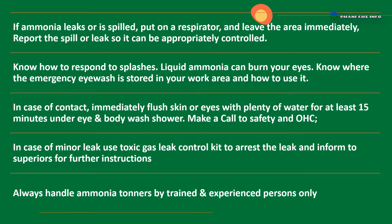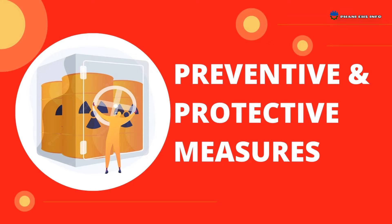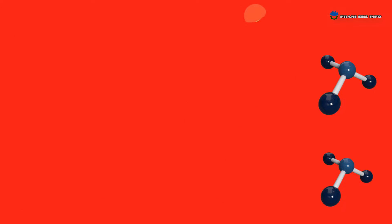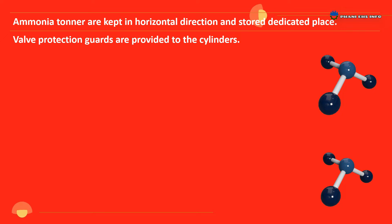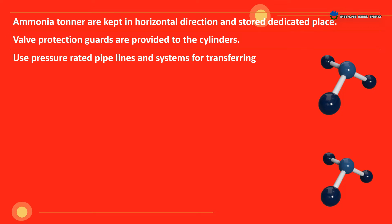Always handle ammonia tonners by trained and experienced persons only. Preventive and protective measures at ammonia storage and handling areas — Engineering Controls: Ammonia tonners are kept in a horizontal direction and stored in a dedicated place without causing any harm or damage to the spindle valve of the cylinder. Valve protection guards are available for the cylinders. Use pressure-rated pipelines and systems for transferring.